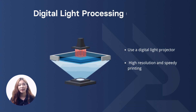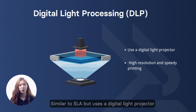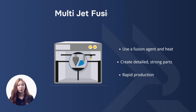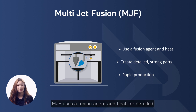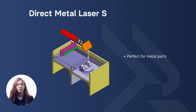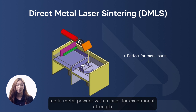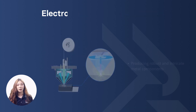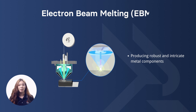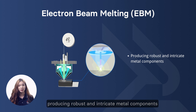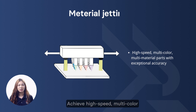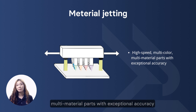Digital Light Processing, or DLP, is similar to SLA but uses a digital light projector, offering high resolution and speedy printing. Multi Jet Fusion, or MJF, uses a fusion agent and heat for detailed, strong parts and rapid production. Direct Metal Laser Sintering, or DMLS, is perfect for metal parts, melting metal powder with a laser for exceptional strength. Electron Beam Melting, or EBM, uses an electron beam to melt metal powder, producing robust and intricate metal components. Material Jetting achieves high-speed, multi-color, multi-material parts with exceptional accuracy.